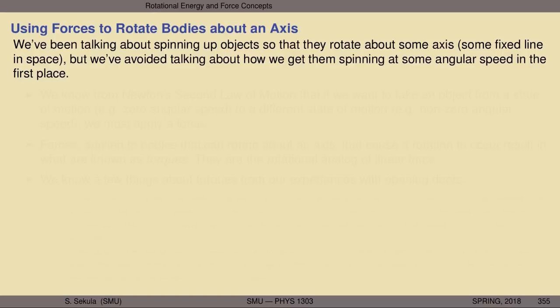Now we've been talking about spinning up objects so that they rotate about some axis, but we've totally avoided talking about how we get them spinning in the first place. We have to translate concepts of force and displacement and work into changes in kinetic energy. Can we recover the work-kinetic energy theorem in a rotational sense? Can we talk about how something accelerates when a force is applied some distance from its axis of rotation? How do forces cause angular accelerations, and what does rotational work look like?